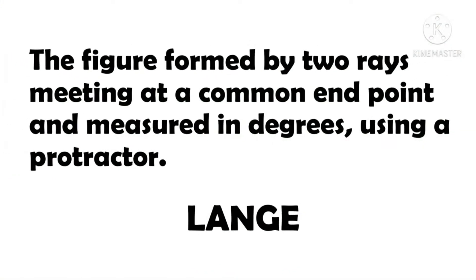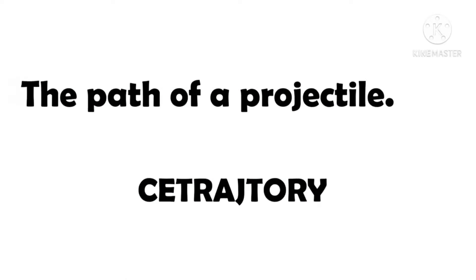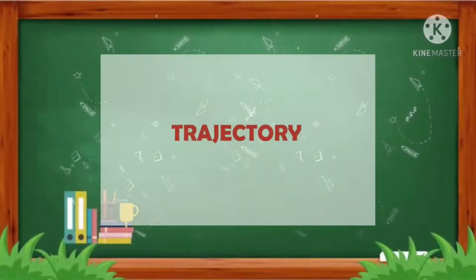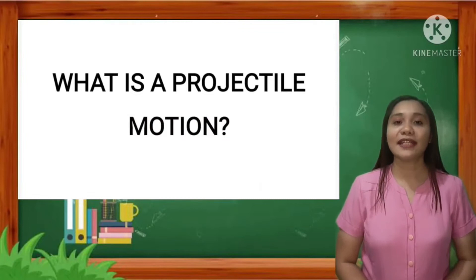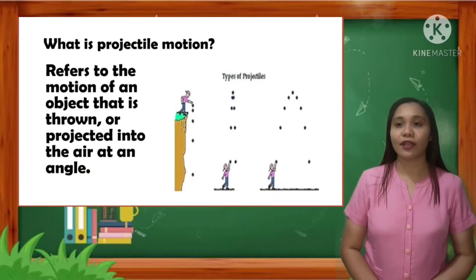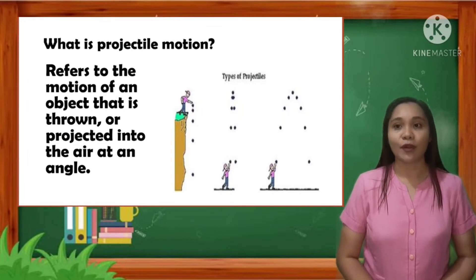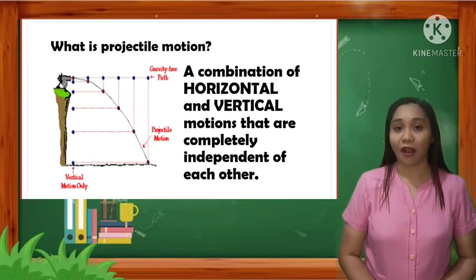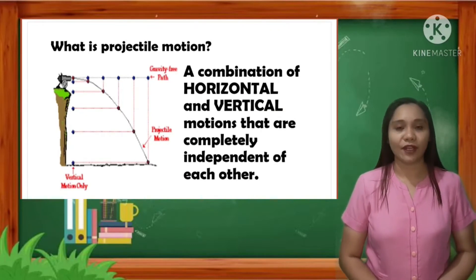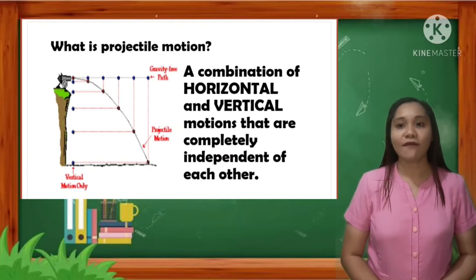The figure formed by two rays meeting at a common endpoint and measured in degrees using a protractor. The correct answer is angle. The path of a projectile is an object thrown or projected into the air at an angle. Also, a combination of horizontal and vertical motions that are completely independent of each other.